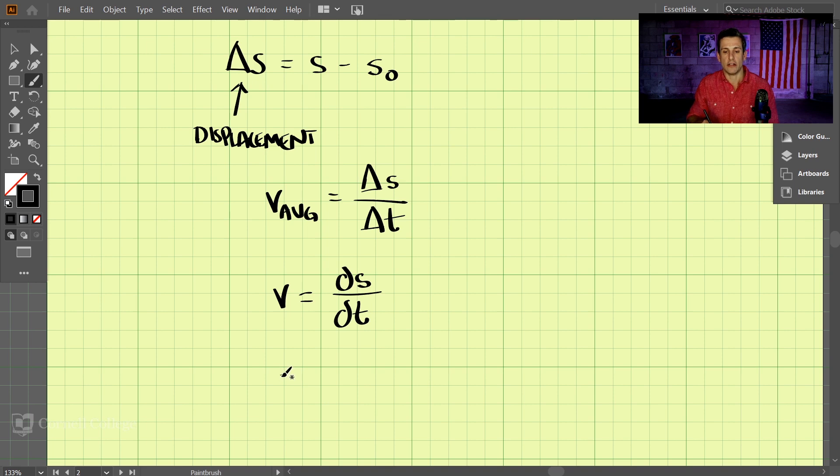And likewise, you've all seen that the acceleration, the instantaneous acceleration, is dv/dt, the derivative of the velocity with respect to time. And likewise, we see that the acceleration is also equal to the second derivative of position with respect to time. You've all seen this before, and the graphs that associate these together.